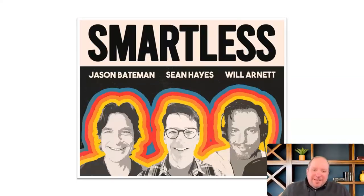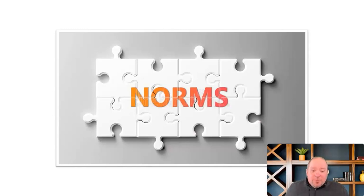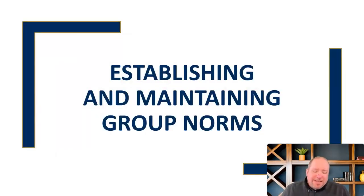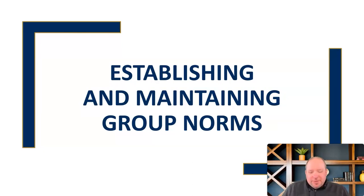Determining these things really comes down to what is the norm for that group. These are simple things, but they're things that are determined by group norms. Norms are just things that guide group behavior and conduct. So as we're going to discuss today, we're going to talk about establishing and maintaining group norms, what they are, why they're important, and how we can use them effectively in groups. So we're going to focus on group norms.